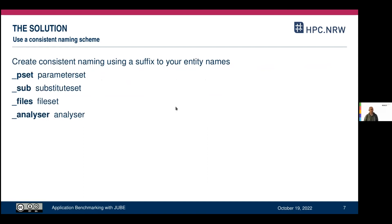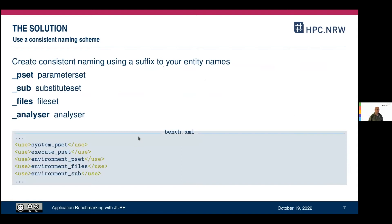What works for me is using suffixes: 'pset' for parameter sets, 'sub' for substitute sets, 'files' for file sets, 'pat' for patterns, and 'analyzer' for the analysis part. With those, you end up with quite easily readable 'use' statements — for example, three parameter sets at the top, a file set, and a substitution set.